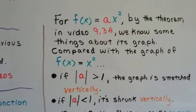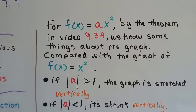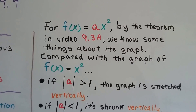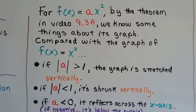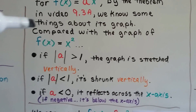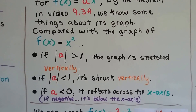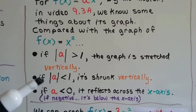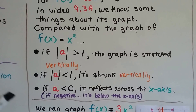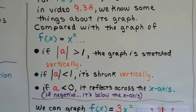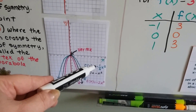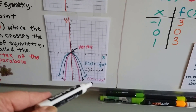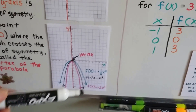For f(x) equals x squared, by the theorem in video 9.3a, compared with this base graph: if the absolute value of a is greater than 1, the graph is stretched vertically; if the absolute value of a is less than 1, it's shrunk vertically; and if a is less than 0, it reflects across the x-axis and opens downward, below the x-axis. So negative values like negative one-half x squared, negative x squared, and negative 2x squared all fall below the x-axis.